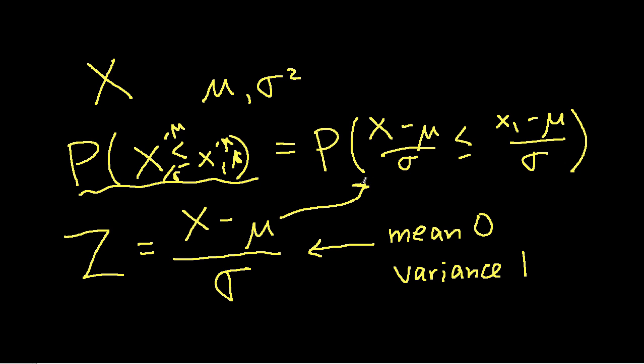And we know from our definition that this guy here is Z. So now we have the probability of Z less than or equal to x1 minus mu over sigma. Again Z is a standard normal random variable. And we have tables of its cumulative distribution function. We can also compute this easily with a spreadsheet.